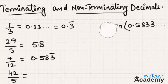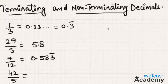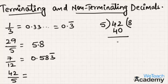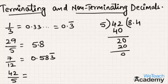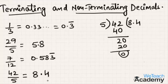For the last example, let us divide 42 by 5. Now 5 times 8 is 40, and 42 minus 40 gives remainder 2. Since 2 is not divisible by 5, we place a point here and write 0. Now 5 times 4 is 20, and 20 minus 20 gives remainder 0. Hence 8.4 is the decimal form of 42 by 5. Since 8.4 is a finite, non-repeating decimal, we call this a terminating decimal, which is a non-recurring decimal.